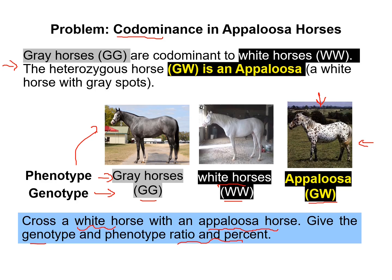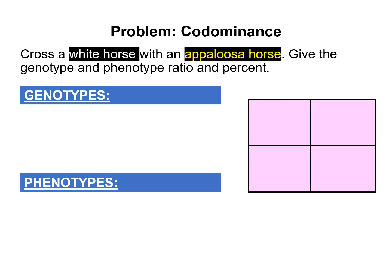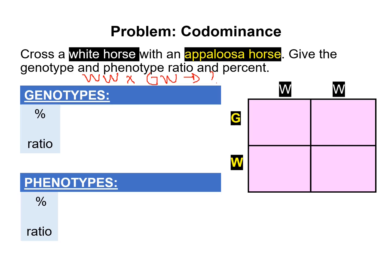It's very easy — let's try to do it. First, you need to remember that white horses have a specific genotype according to the previous information, and the appaloosa horses are the heterozygous. You have to draw your Punnett square: here you have the white horses and here the appaloosa horses, giving you the first, second, third, and fourth genotypes.